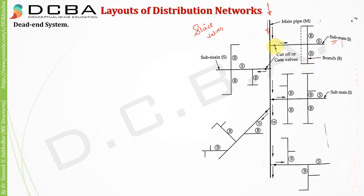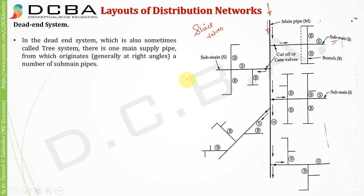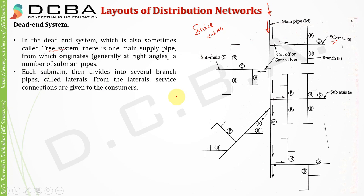When the sub main pipes are further divided, those pipes are called branch pipes. This system is also called a tree system because, like a tree, there is a main trunk that divides into sub mains, then further into branch pipes called laterals. From the laterals, service connections are given to the consumers.